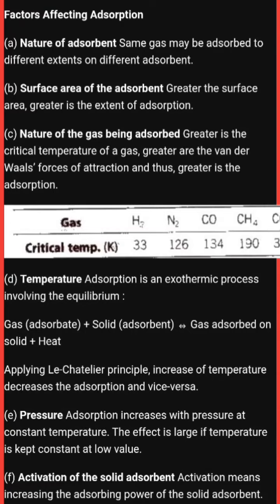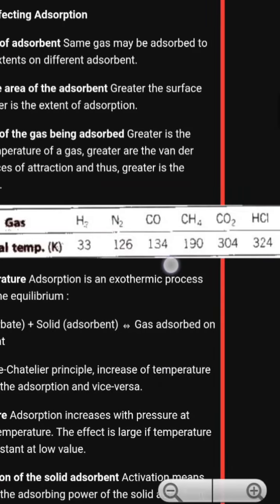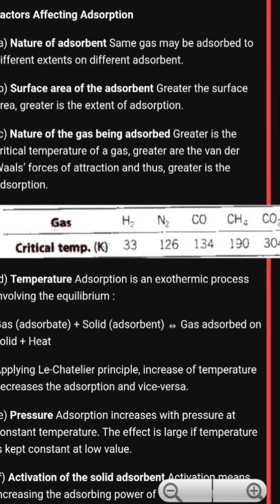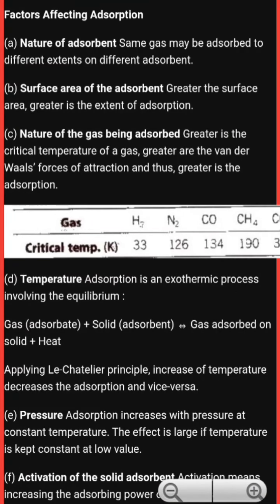When comparing critical temperatures: N₂O is 183K, methane (CH₄) is 190K, carbon dioxide (CO₂) is 304K, hydrochloric acid (HCl) is 324K, ammonia (NH₃) is 406K, and sulfur dioxide (SO₂) is 430K. Gases with higher critical temperatures show greater adsorption on the adsorbent.